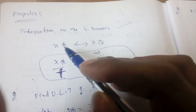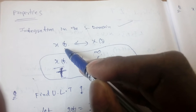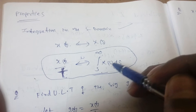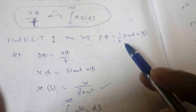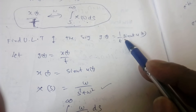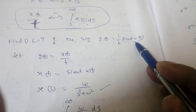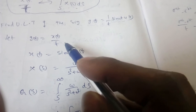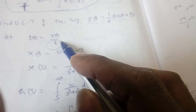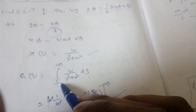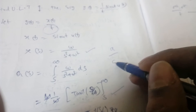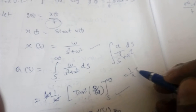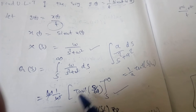Remember this point: if x(t) has Laplace transform X(s), and I divide x(t) by t, I have to integrate X(s) with limits from s to infinity. For example, g(t) equals (1/t) sin(ωt) u(t). We know that for sin(ωt)u(t), the Laplace transform is ω by s squared plus ω squared. Since we are dividing x(t) by t, I have to integrate from s to infinity of ω by (s squared plus ω squared) ds.